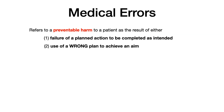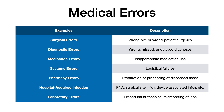Medical errors refers to a preventable harm to a patient that is the result of either one, a failure of a planned action to be completed as intended, or two, the use of a wrong plan to achieve an aim. There are two important components: it was preventable, and it caused harm to an individual. There are lots of different examples of medical errors, broken into various categories.